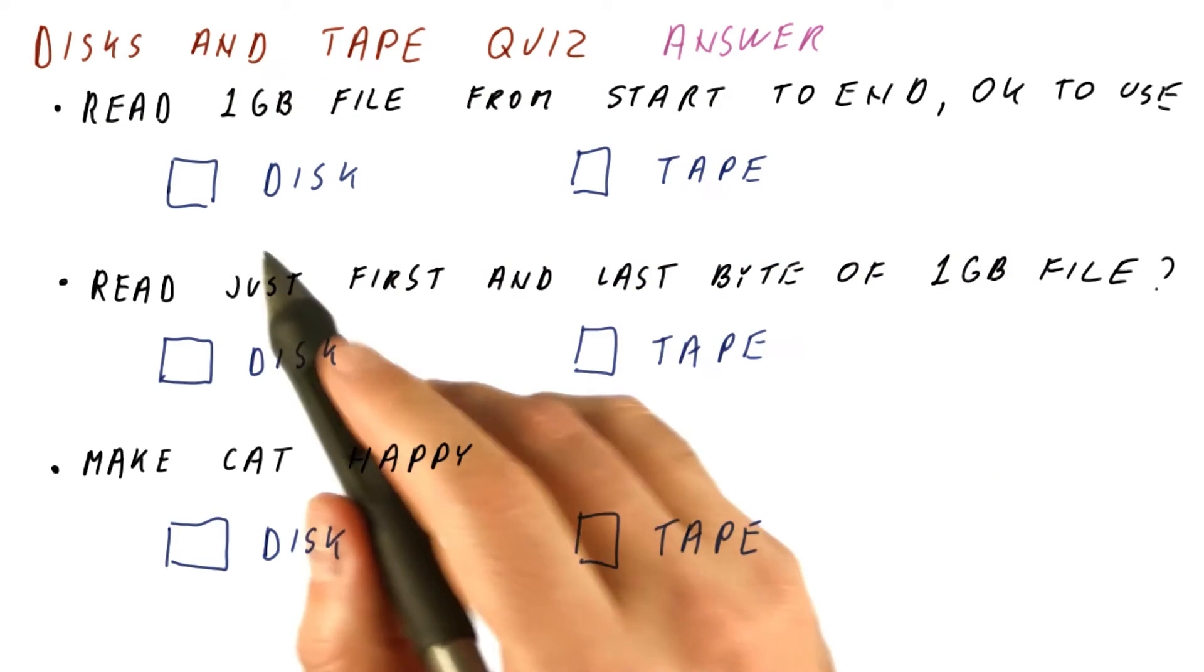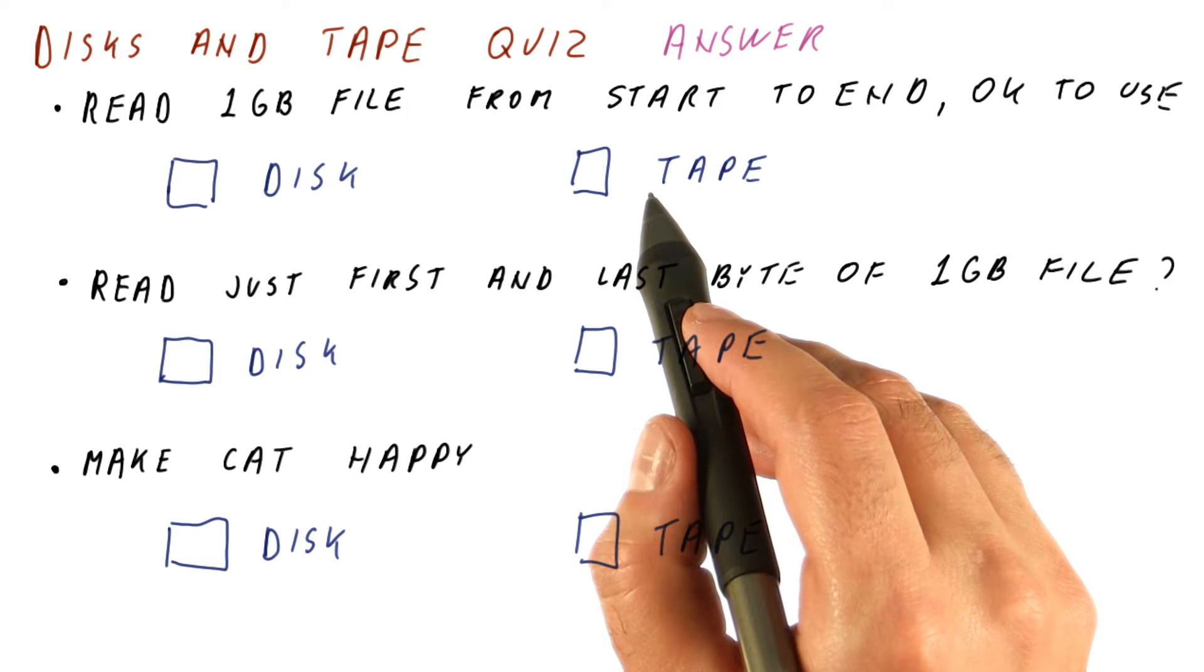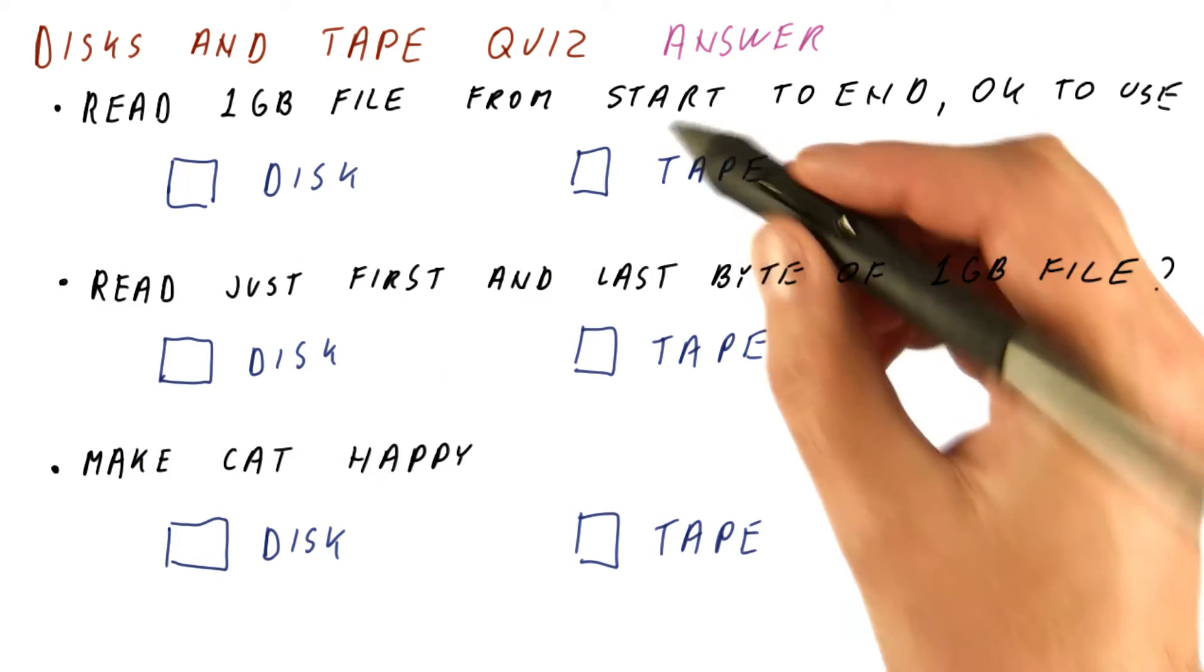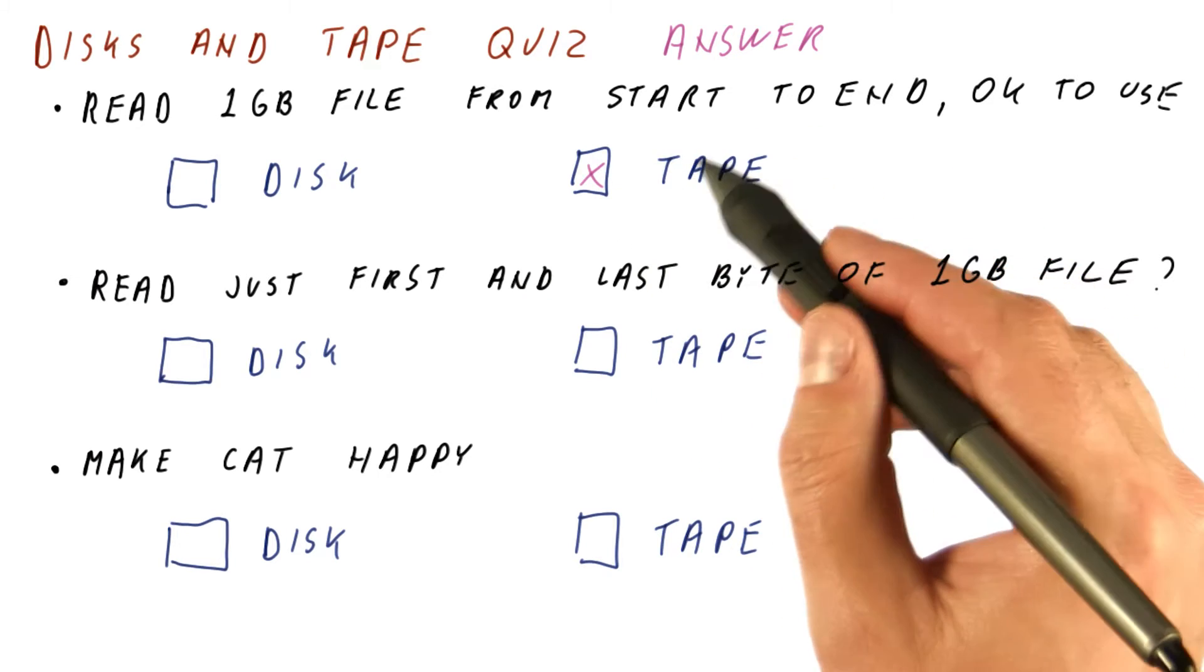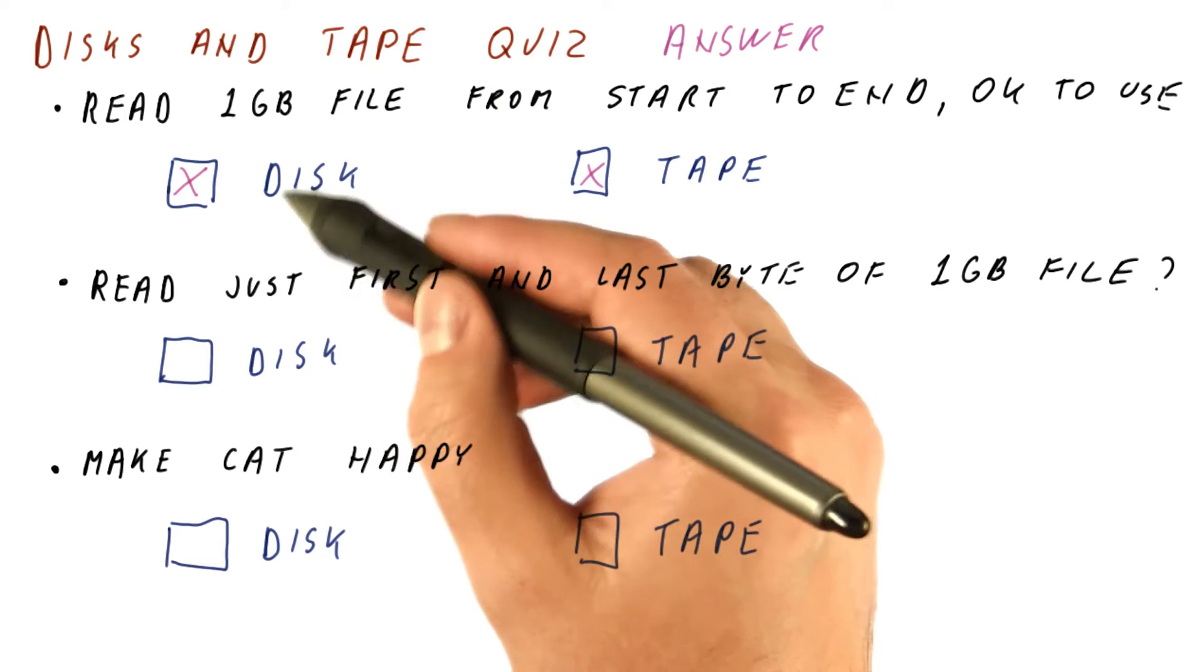Let's discuss the answer to our disks and tape quiz. Tape can only efficiently support sequential accesses. We are reading a large file from start to end, which is a sequential access, so it's okay to use tape. However, the disk will not do too bad on that either.